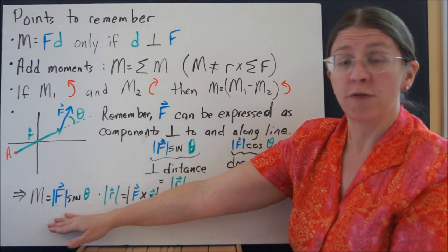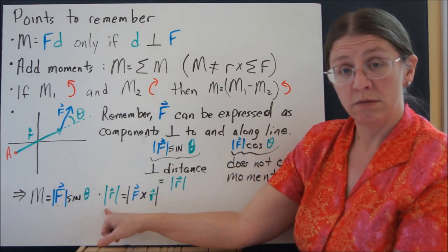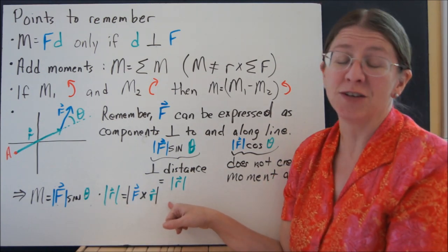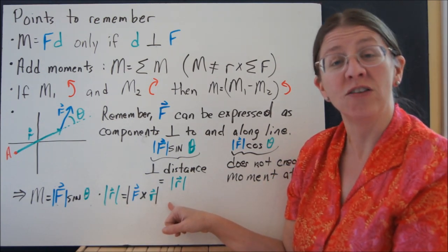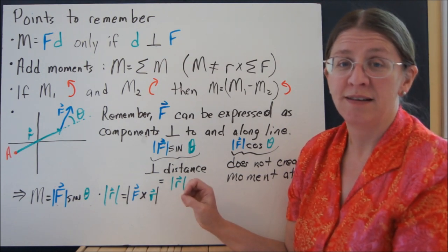So you can say M is F sine theta, that's this component, times R. That's my scalar method, which gives me actually the definition of a cross-product. It is all the same stuff. Next time we'll talk about couples and then reaction moments. Thanks.